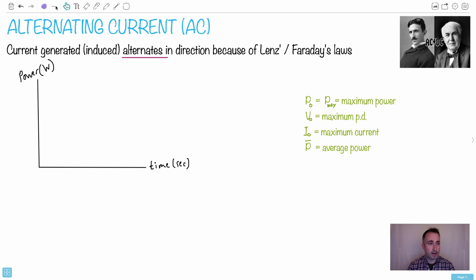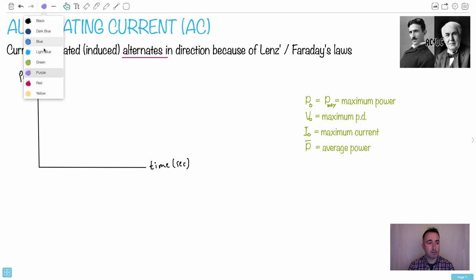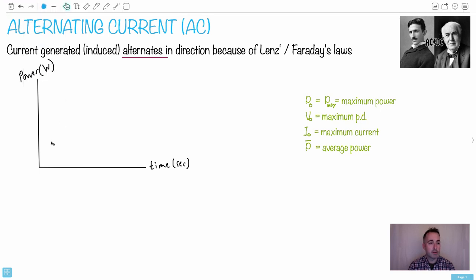So if we did a graph of the power - remember power is just the current times the voltage, or sorry, the potential difference - as a function of time, it would do some sort of sinusoidal function, something like this. And it would just continue on forever.